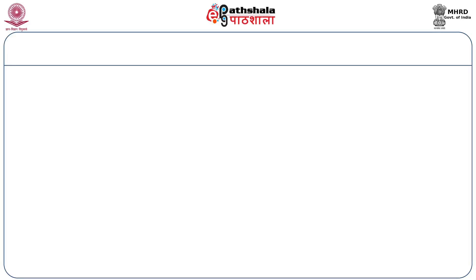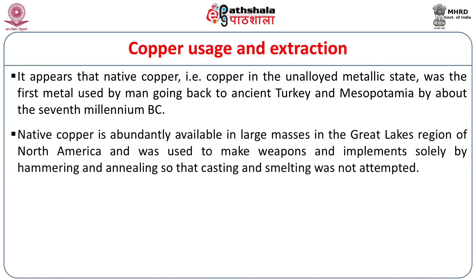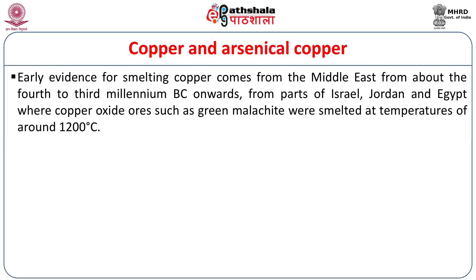We now come to the usage and extraction of copper. It appears that native copper — copper in the unalloyed metallic state — was the first metal used by man, going back to ancient Turkey and Mesopotamia about the seventh millennium BCE. It is also interesting that native copper was abundantly available in the Great Lakes region of North America, and the North American Indians used native copper to make weapons and implements solely by hammering and annealing, so that they never needed to attempt casting and smelting. Early evidence for smelting copper comes from the Middle East, from about the fourth to third millennium BCE, from parts of Israel, Jordan, and Egypt, where copper oxide ores such as green malachite were smelted at temperatures of around 1200°C.